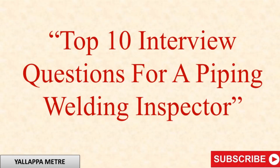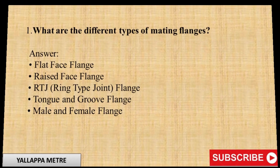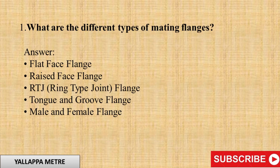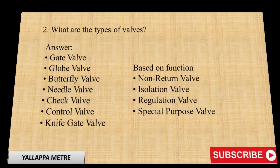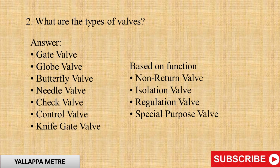Top 10 Interview Questions for a Piping Welding Inspector. Question 1: What are the different types of mating flanges? Answer: Flat face flange, raised face flange, RTJ (ring type joint) flange, tongue and groove flange, male and female flange.